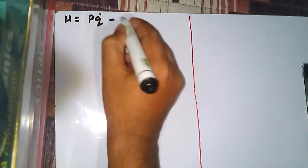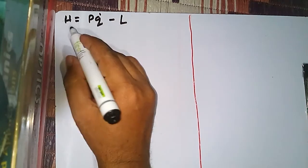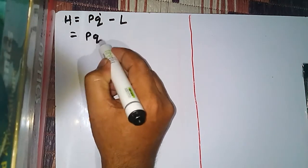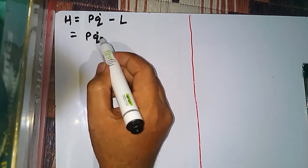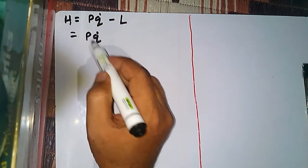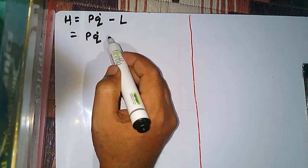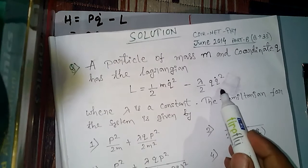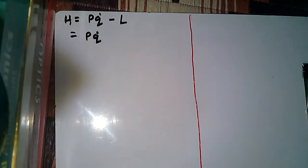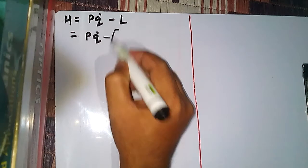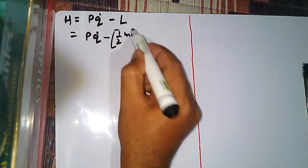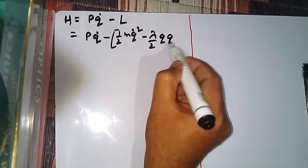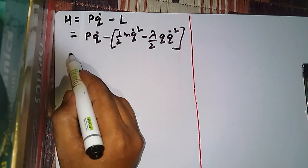The formula for the one-dimensional Hamiltonian is H = pq̇ - L. We keep q̇ as it is because the Lagrangian contains q̇ and not ẋ. So we write H = pq̇ minus L, where L = (1/2)mq̇² - (λ/2)q·q̇².